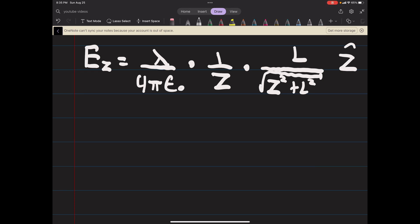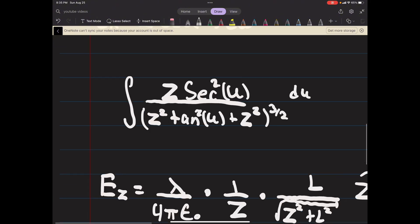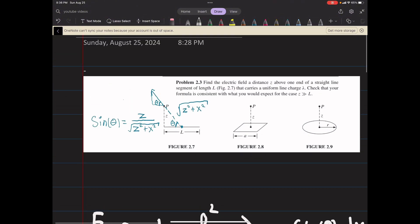There's also going to be a component in the x direction, so we need to find that part. Lambda over 4 pi epsilon naught again, the integral from zero to L, 1 over z squared plus x squared. This time we're going to take the cosine to get the x component.